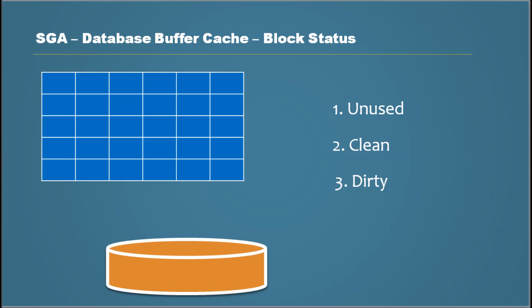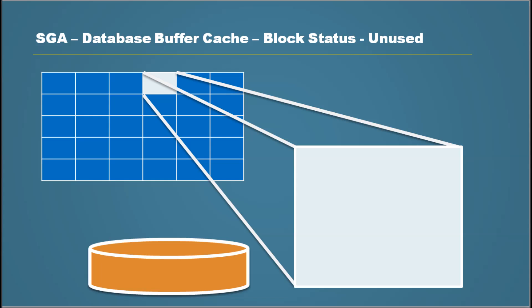For example, if a block is unused, Oracle can write onto it. If the block is dirty, it can trigger a checkpoint operation. So let's look into the unused block. Unused could be an easy status for Oracle to operate on — it doesn't require many resources. Unused means the block was never used since the database was started. There is no data in there.